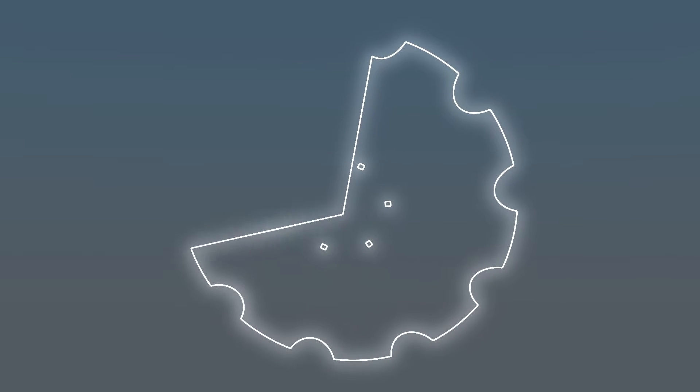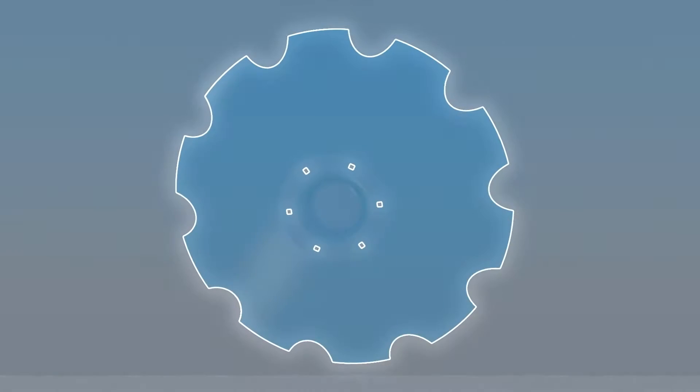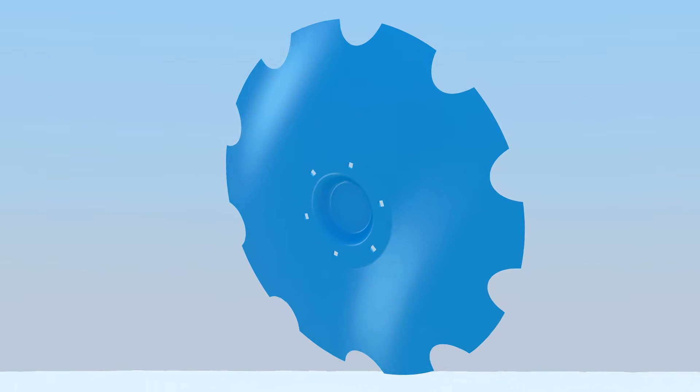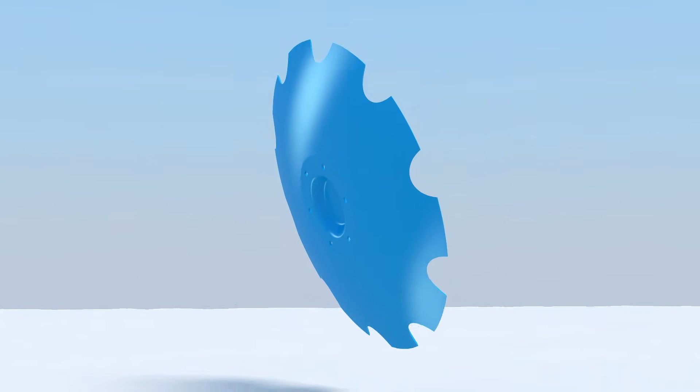The huge disc diameter of over 73 cm already makes the Rubin 12 incomparable on the market. It enables working depths up to 20 cm.